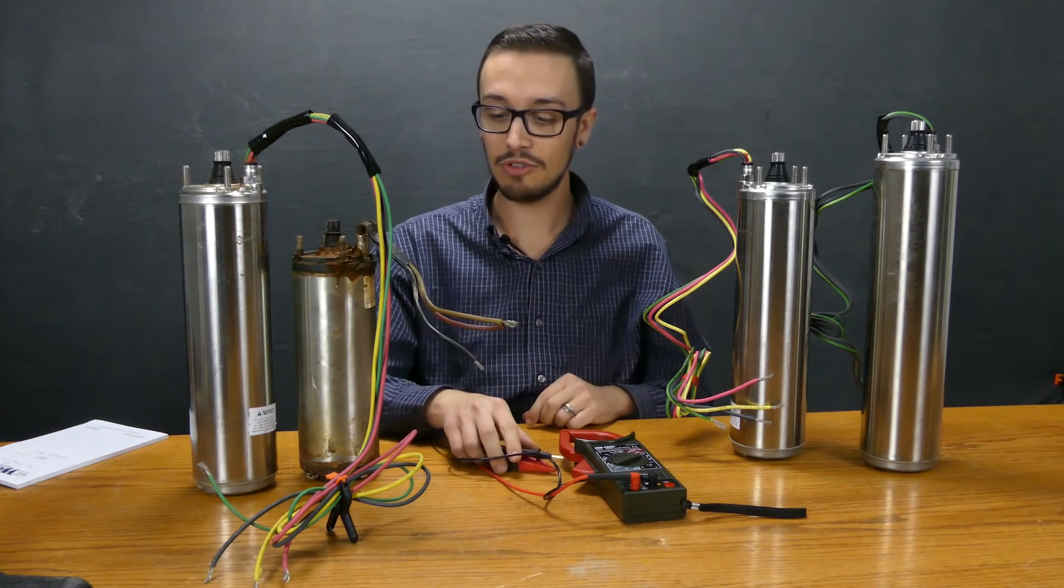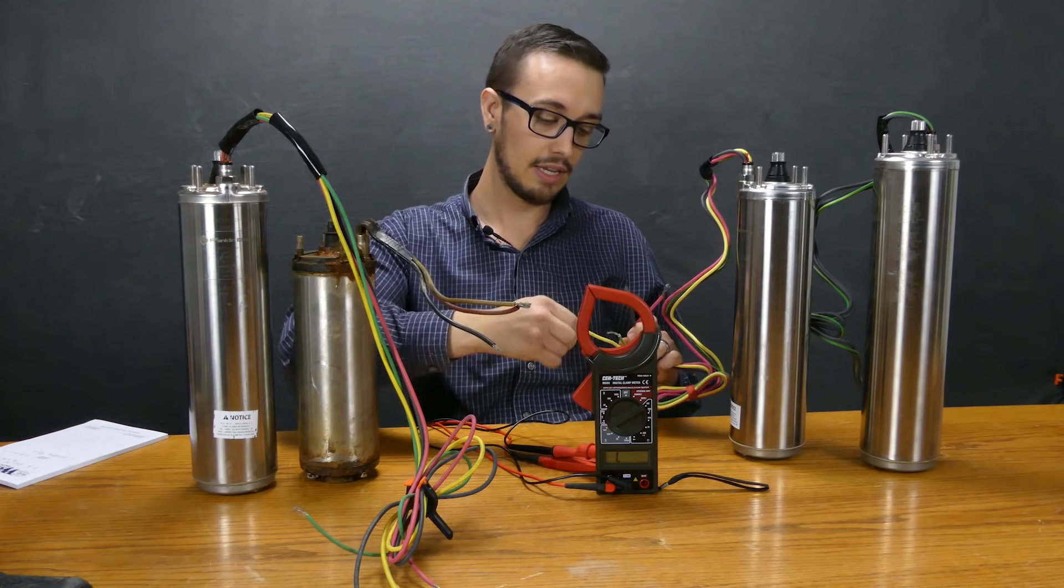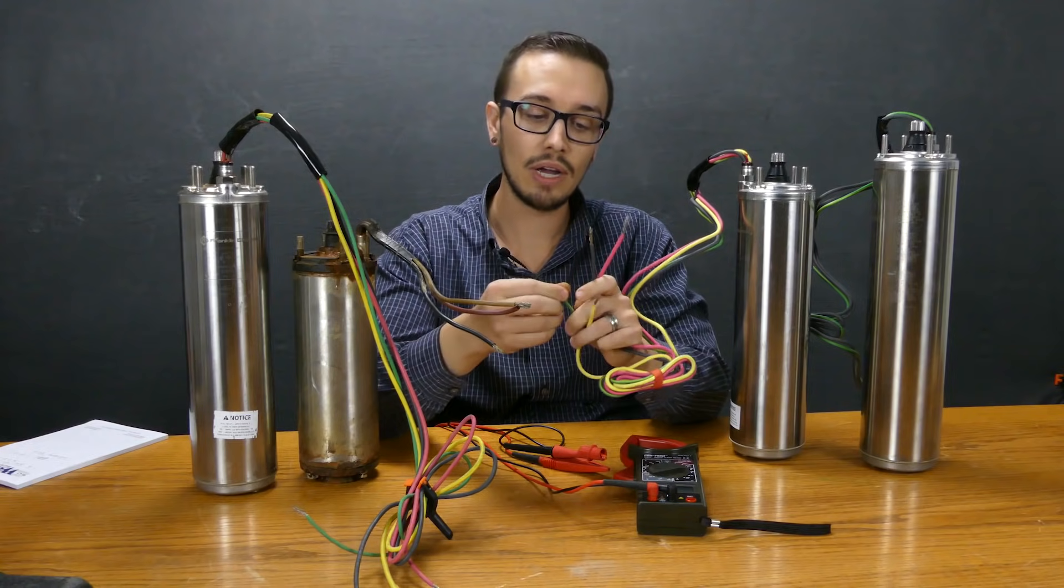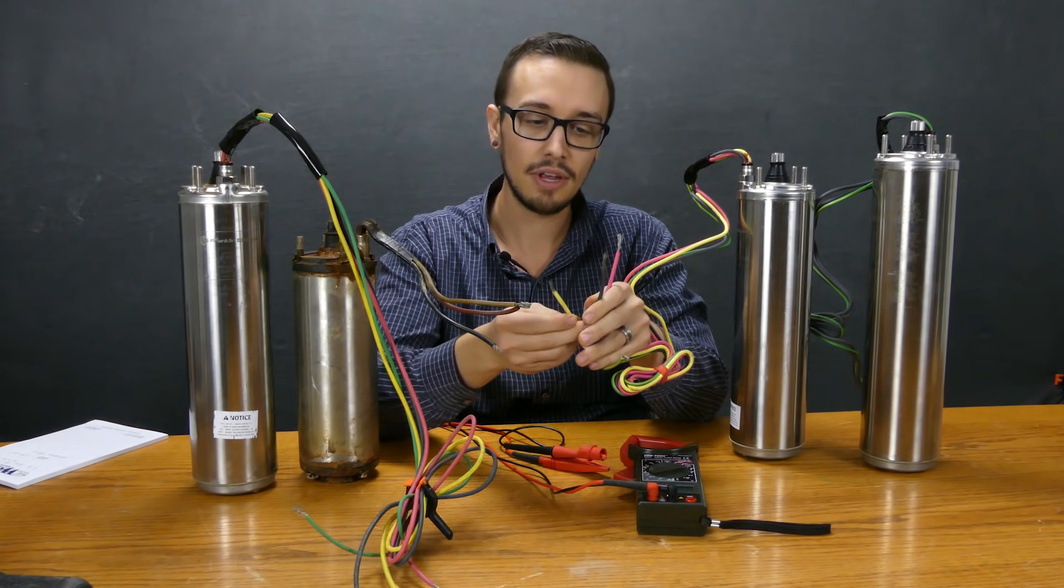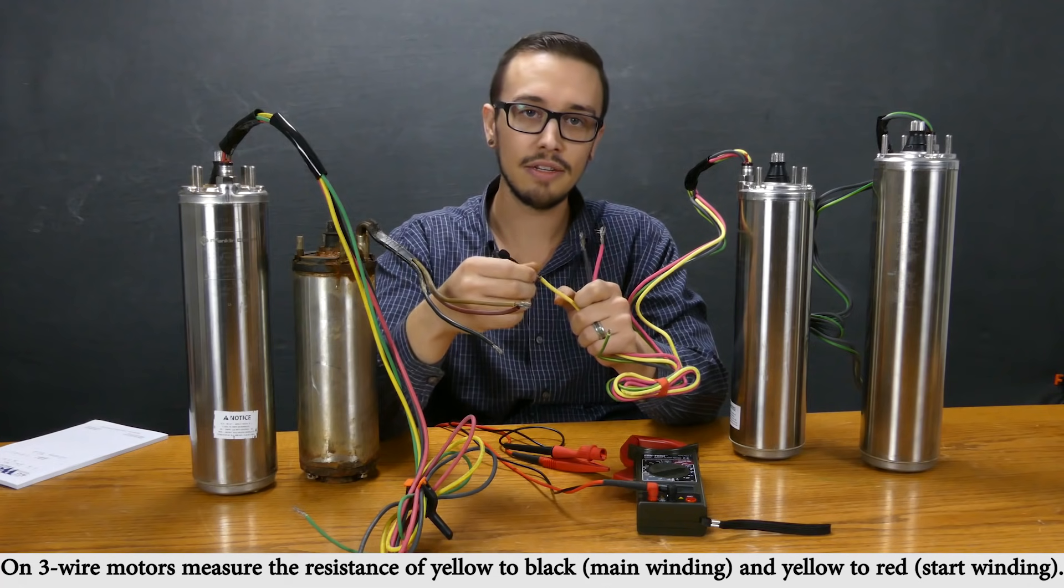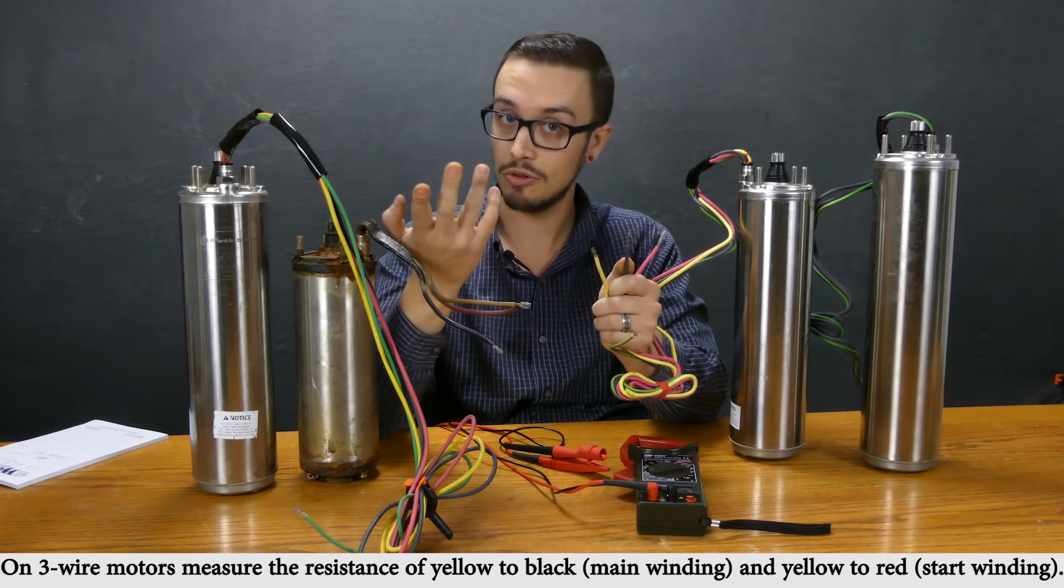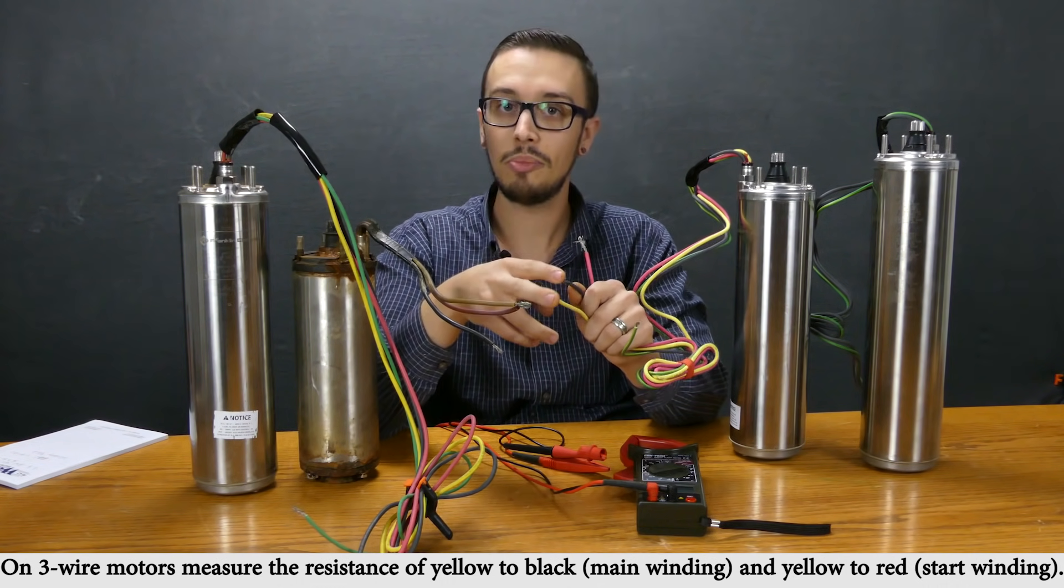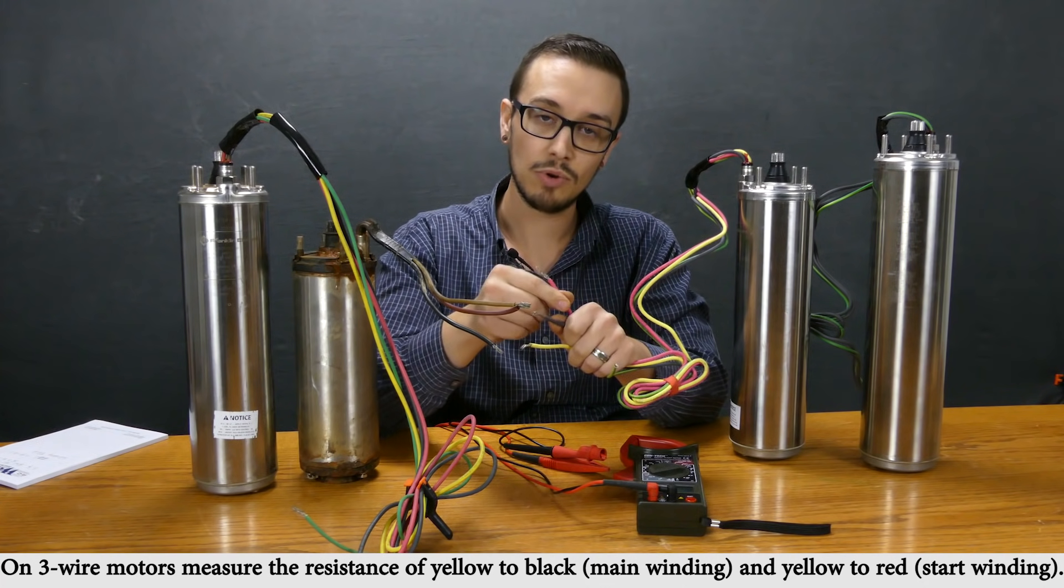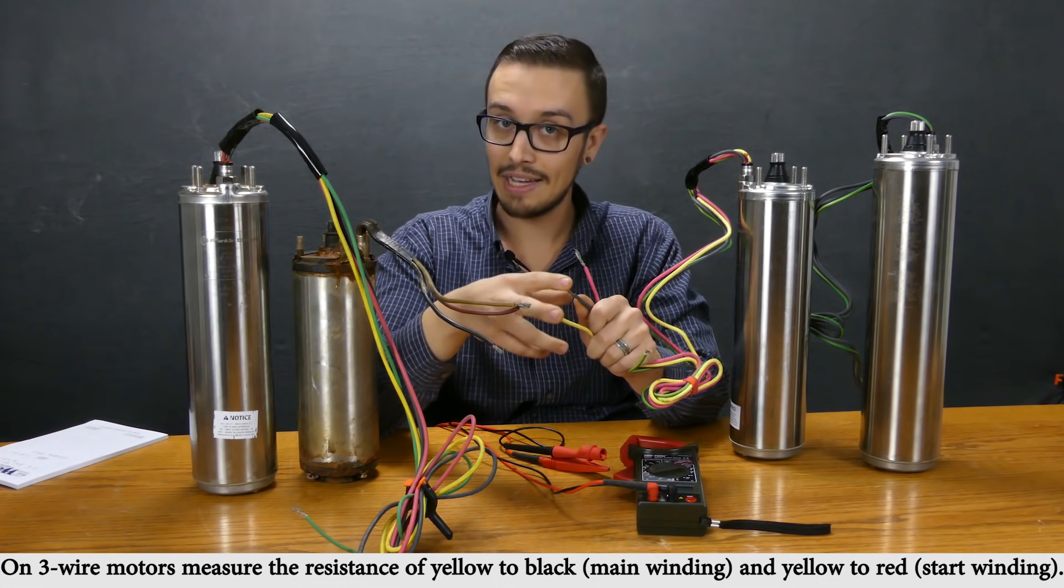We'll jump into the ohm test across the windings. When it comes to testing the ohm resistance between the windings we essentially don't need the ground for this test. We've got the yellow, the black and then the red. Yellow is your common line essentially. Black is going to be the main - so when the pump is up to speed or the motor's up to speed it's going to be relying on these two to power it. But on startup that's where that start capacitor comes into play.